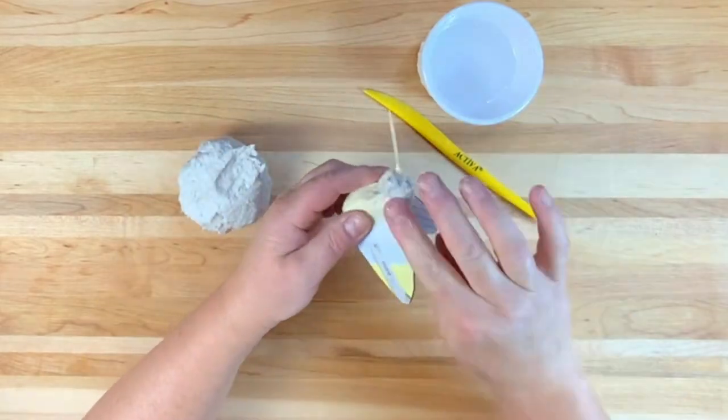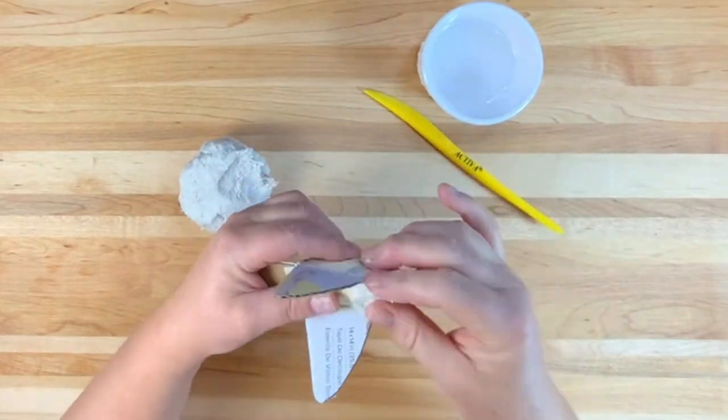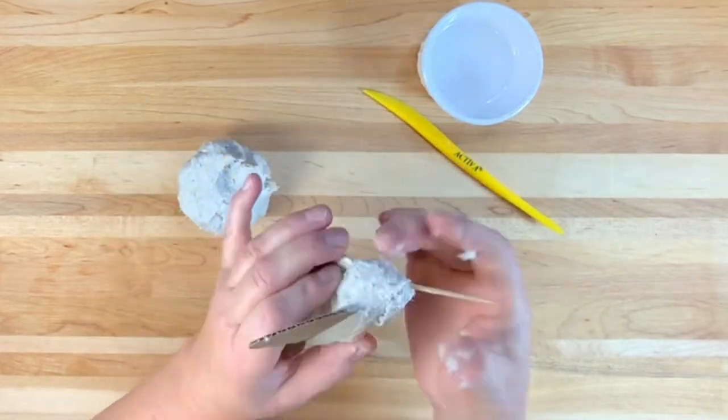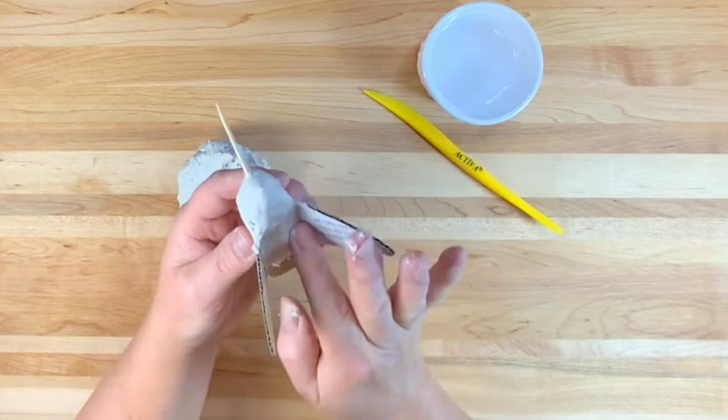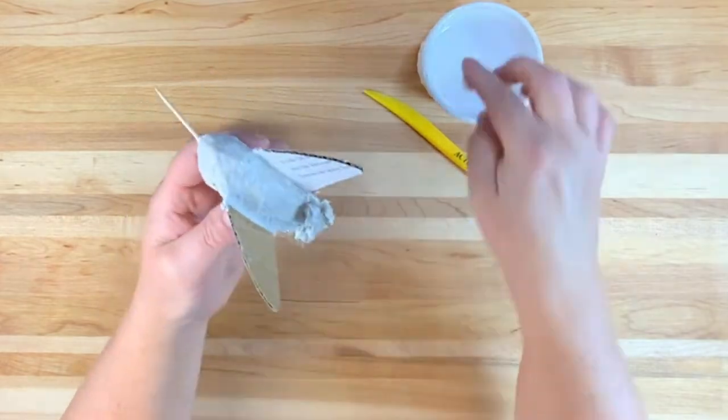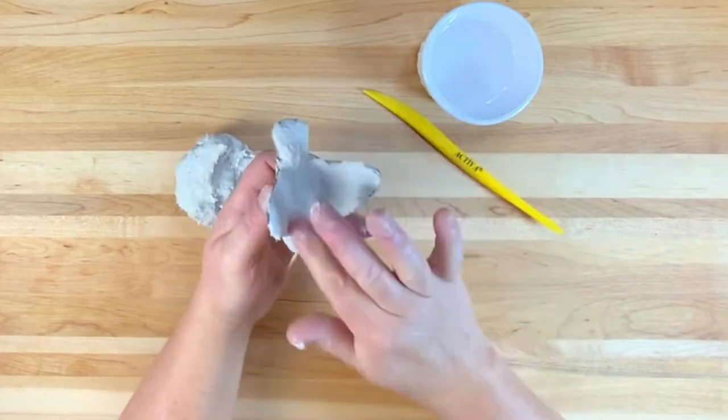Step four, sculpt with the celluclay. Apply celluclay over the armature. Avoid adding it to the bird's toothpick beak. Apply several layers as needed until the armature is fully covered. Allow the celluclay to dry between layers.